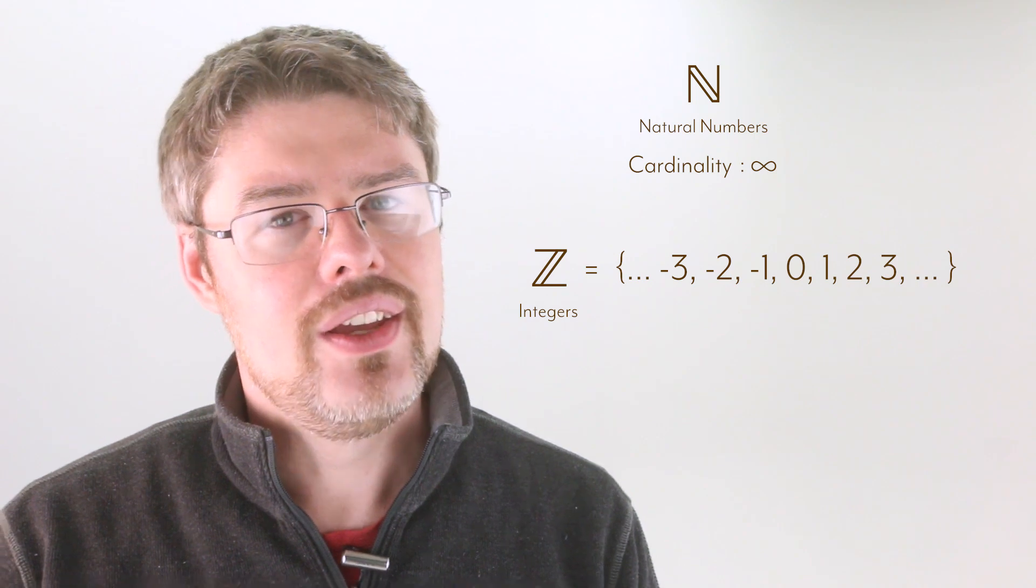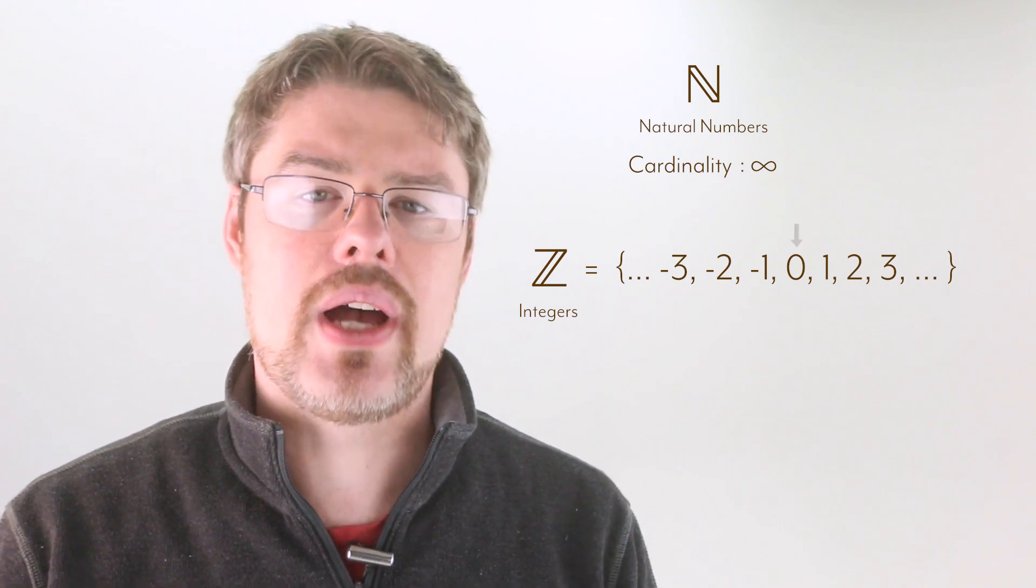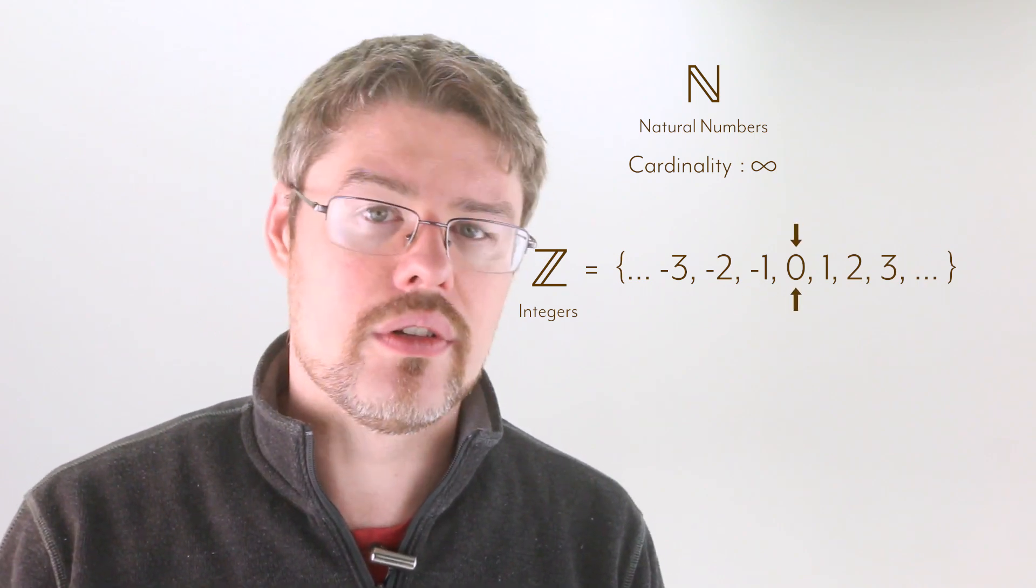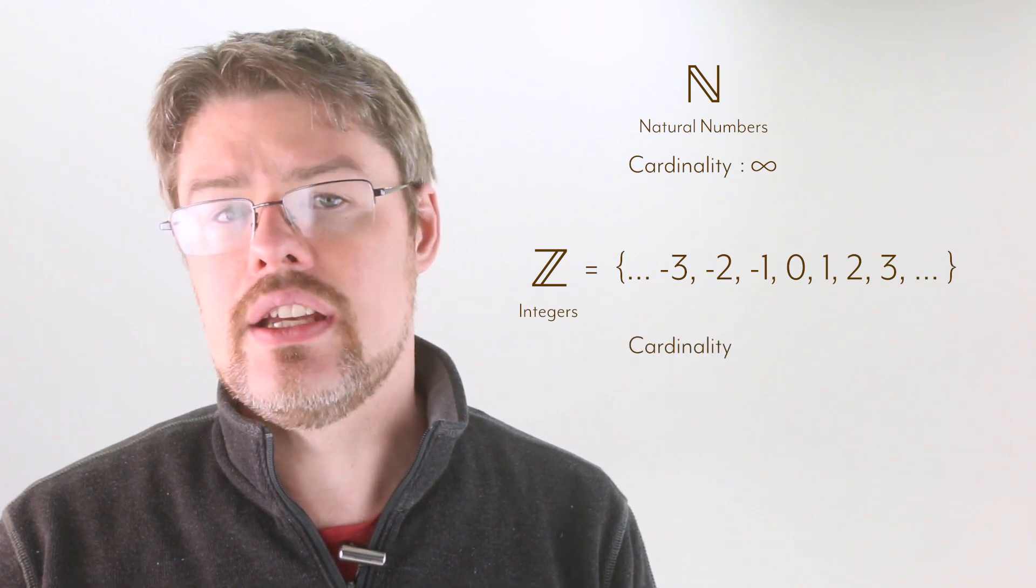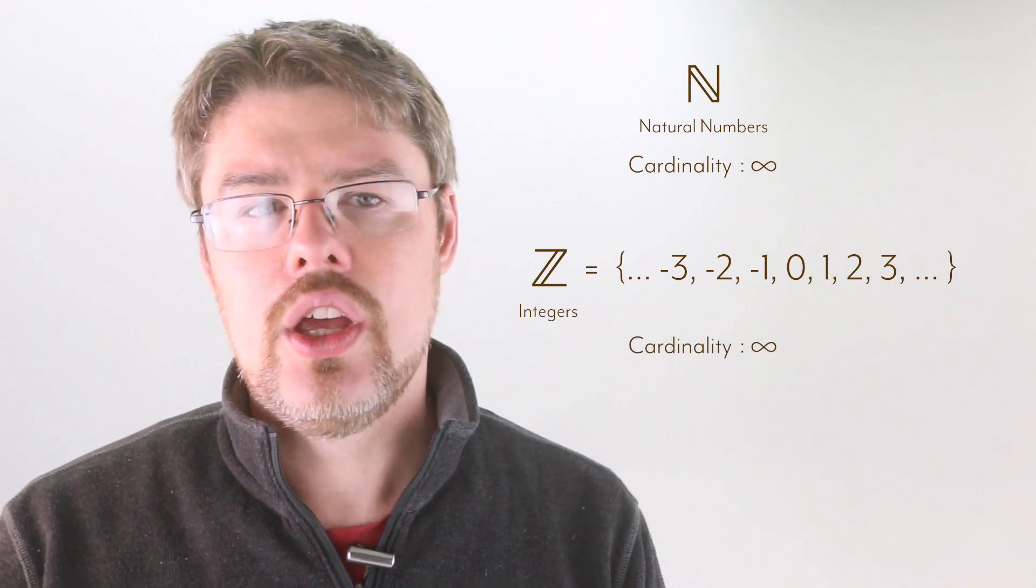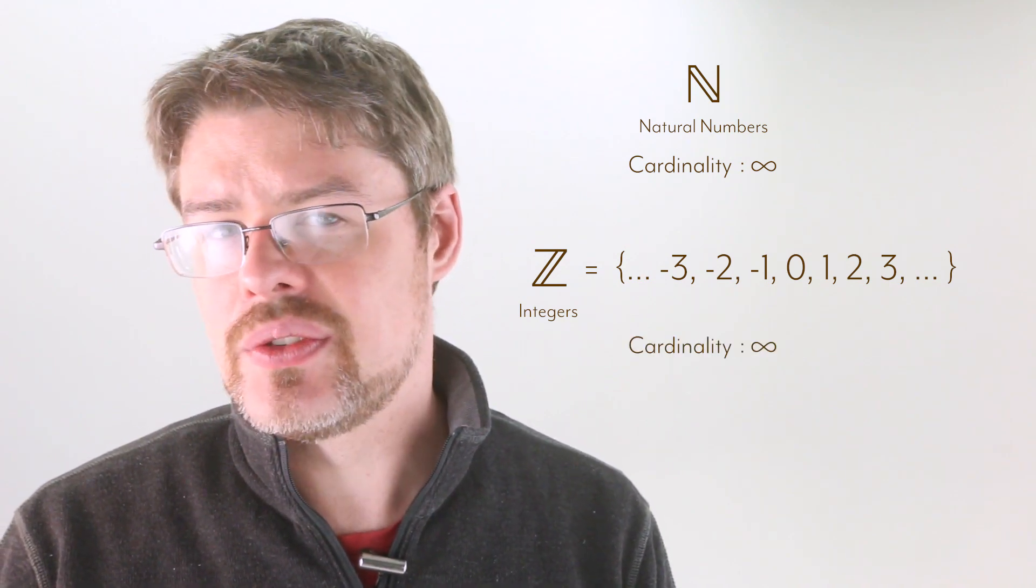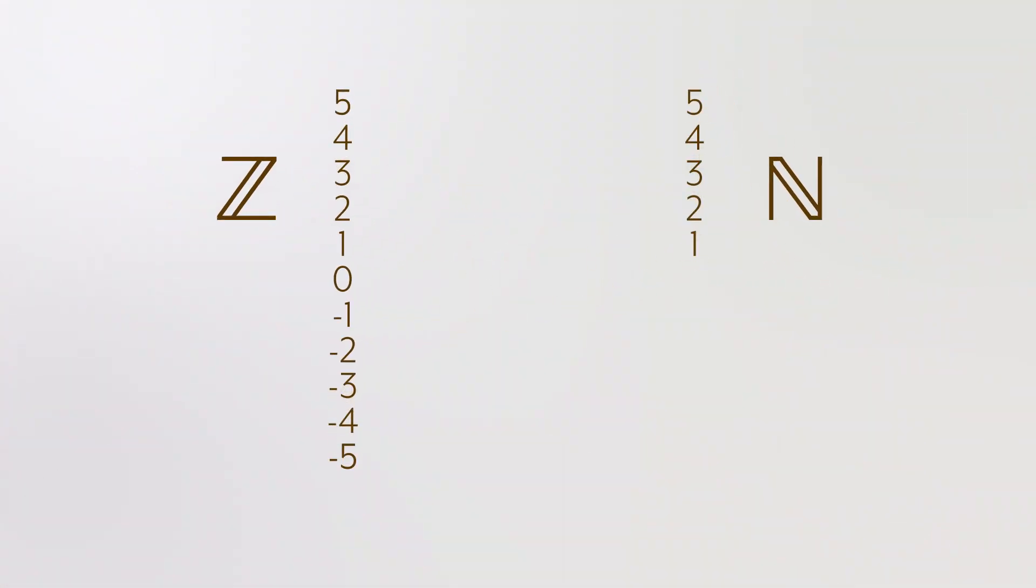How might we compare the cardinality of the naturals to say the cardinality of the integers? Remember, the integers are all of the positive and negative whole numbers with zero. Clearly, the cardinality of the integers is also infinity, but something feels weird about this, right? For every number in the naturals, there's two numbers in the integers. Considering five in the naturals, you have both five and negative five in the integers. Are there then twice as many integers as naturals, despite them both having infinitely large cardinality? That's a good question.